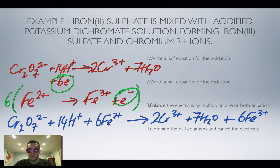Now if you didn't put that six in front of the Fe3 plus, you'd probably see that your charges don't balance because at the moment we've got two minus and 14 plus, that's 12 plus. Another 12 plus so that's 24 plus.